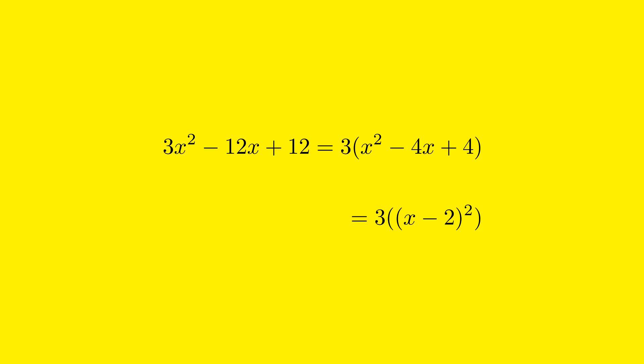In this case, compare the expression x² - 4x + 4 to the perfect square trinomial form to find that a is x and b is 2.